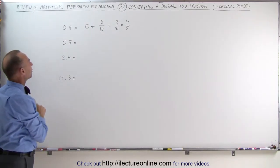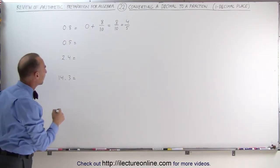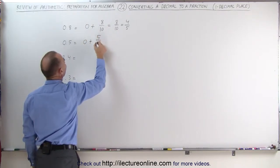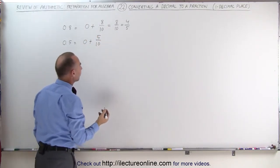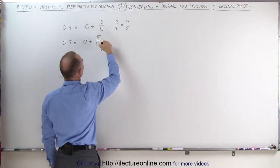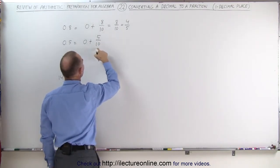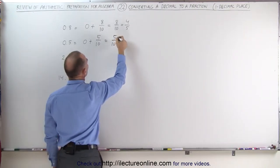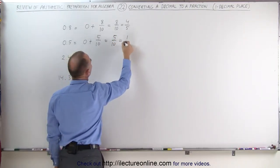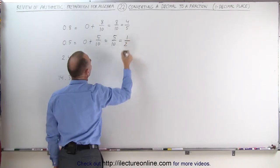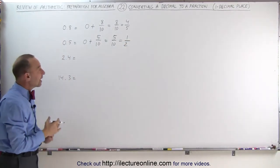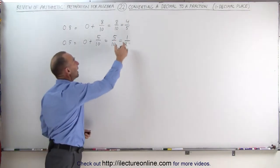Our next example is 0.5. Again, that means it's 0 plus 5 tenths. Well, 5 tenths can be simplified. First let's add 0 to that. We get 5 divided by 10. When we divide the numerator by 5, we get 1, divide the denominator by 5, we get 2. Which means that 0.5 is the same as 5 tenths or it simplifies to 1 half.